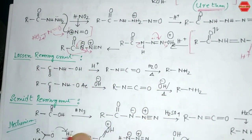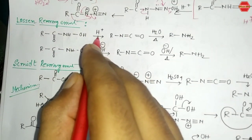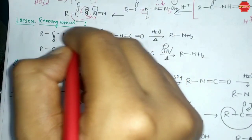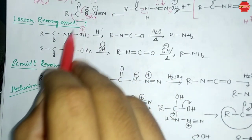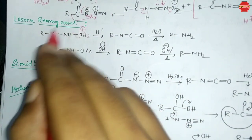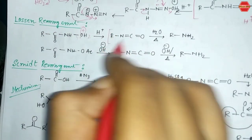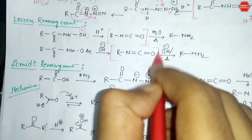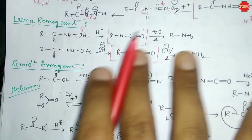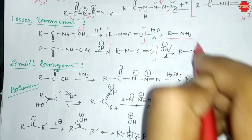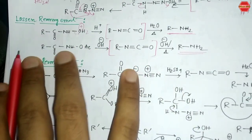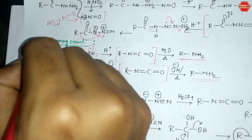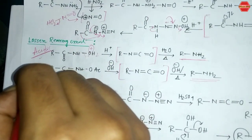The Lossen rearrangement follows a similar mechanism. H⁺ adds to the oxygen, OH₂⁺ leaves the system, rearrangement occurs, and you get the same isocyanate intermediate, ultimately giving the primary amine. The Lossen rearrangement can proceed in acidic or basic medium, and all these reactions form the same isocyanate intermediate, confirming they are interrelated.